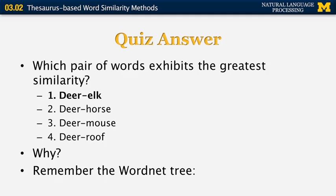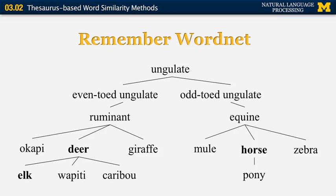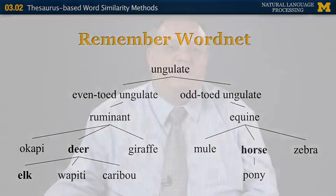Remember the WordNet tree — at least the segment shown under ungulate. Let's see where those words appear in this tree. Deer and elk appear very close to each other; in fact, one of them is an immediate hypernym of the other, whereas horse is pretty far. So if we want to define a similarity metric based on WordNet, the simplest thing we can do is identify the nodes where the words appear and count the number of links needed to get from one to the other.